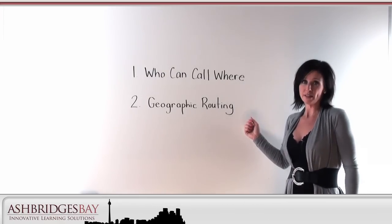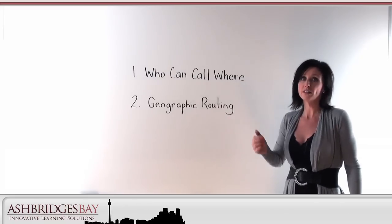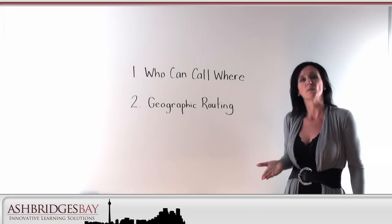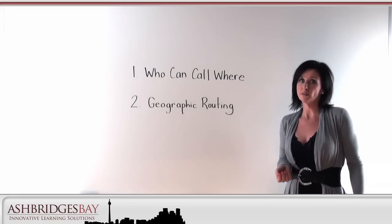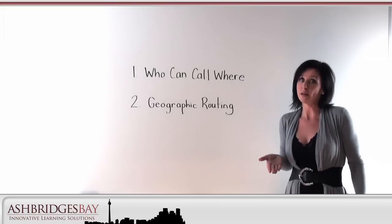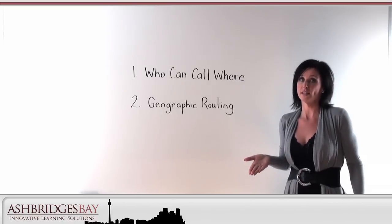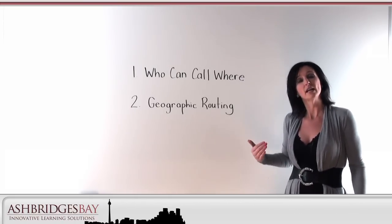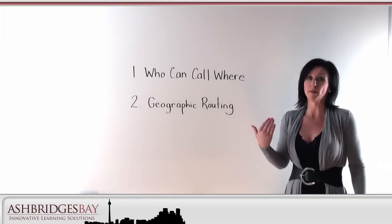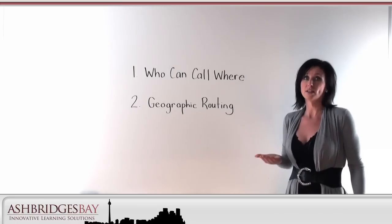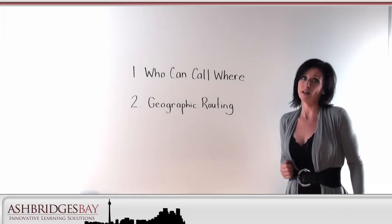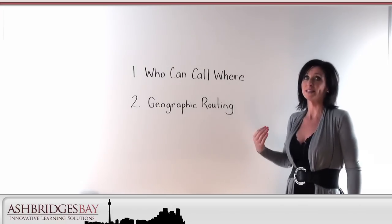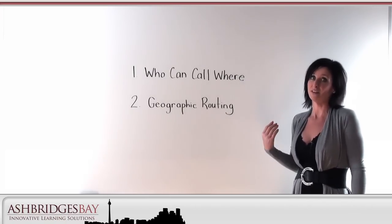Geographic routing is also very important. If you're in the Toronto office and you dial 911, you want that call to go out to the Toronto 911 call center. Or if you're in Peterborough and you dial 911 from the Peterborough office, you want that to go to Peterborough 911, and the fire department or the police department will end up at that office.